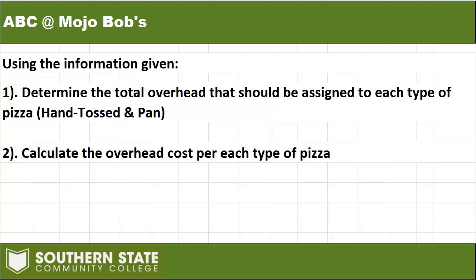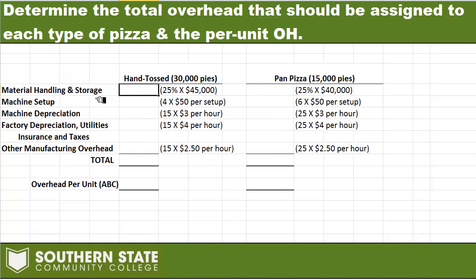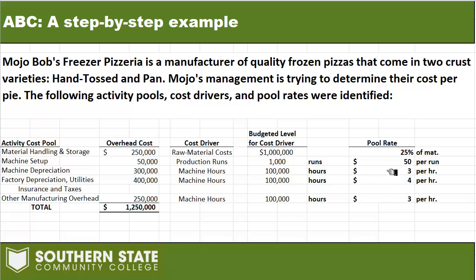Now that we have all the data we need, step one is to determine the total overhead that should be assigned to each type of pizza, and step two is to calculate the overhead cost per unit for each type. We have all the activity centers listed out with our two product categories — hand-tossed and pan — and we're going to take the pool rates and multiply them by the level of activity actually incurred.